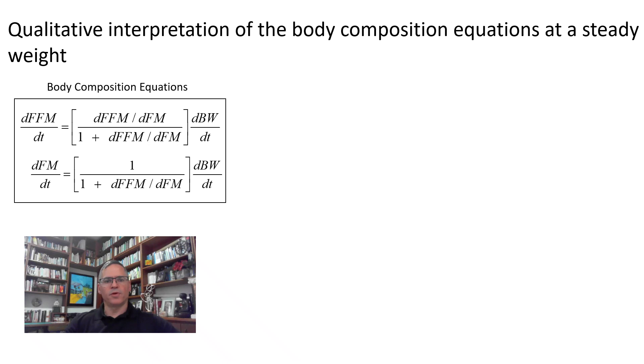According to the body composition equations, if body weight is steady over a prolonged period, its time derivative is on average zero, and hence the fat free mass and fat mass derivatives are also zero on average. This simply means that a steady weight implies a steady body composition, which begs the question why this is the case. I now provide a qualitative interpretation of the body composition equations at a steady weight.